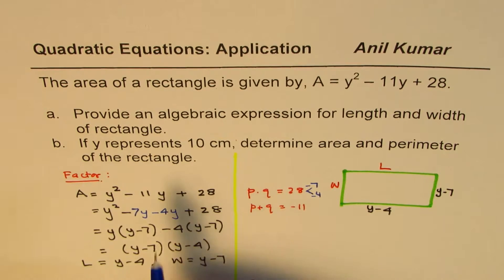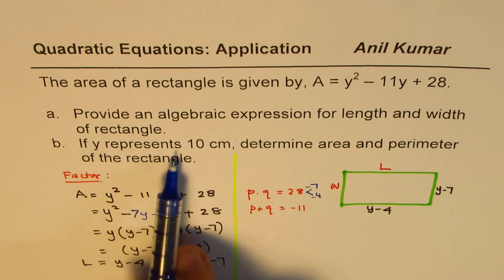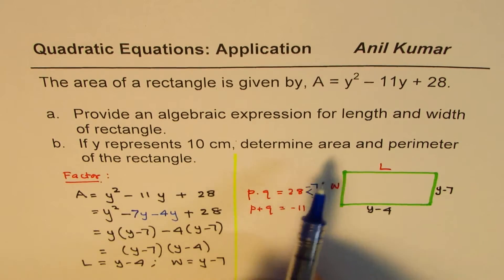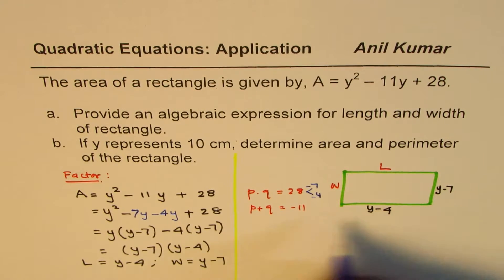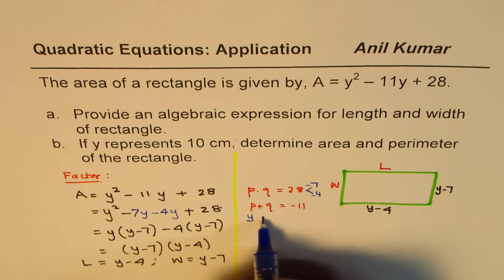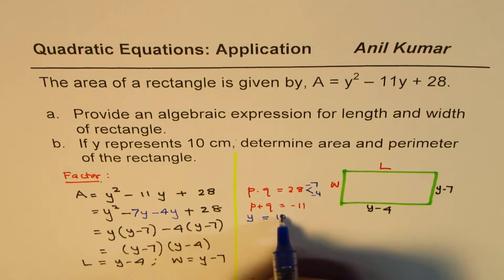Now part B of this question is, if Y represents 10 centimeters, determine area and perimeter. So first, let's find length and width, then we can find area and perimeter. So what we are given here is that Y equals 10 centimeters.